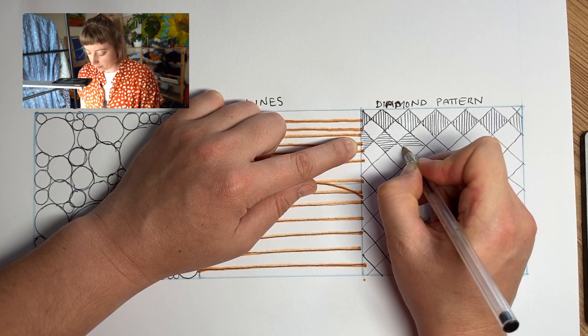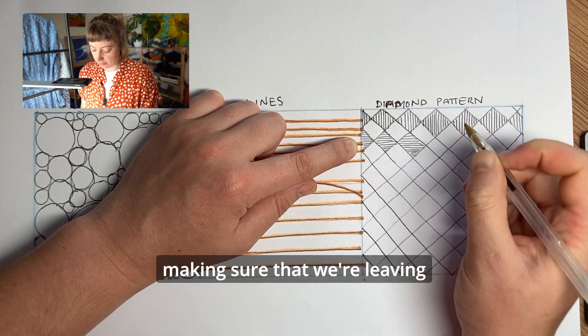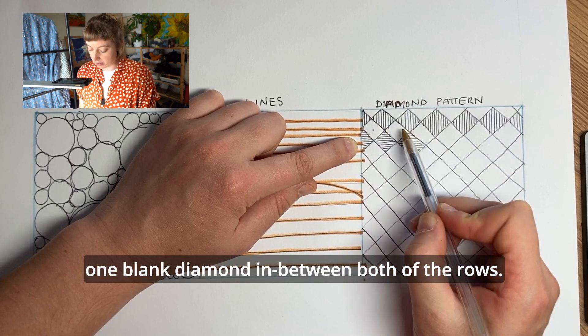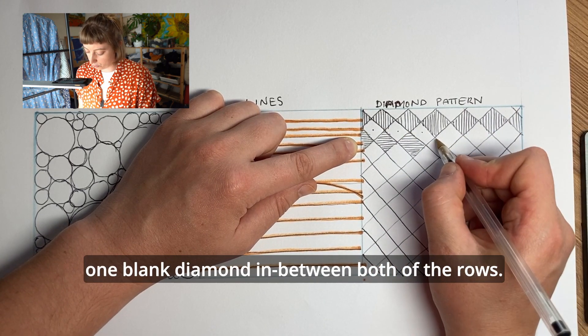Make sure that we're leaving one blank diamond in between both of the rows.